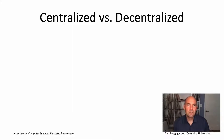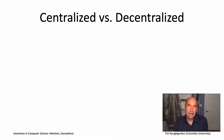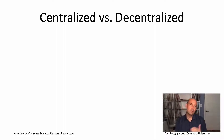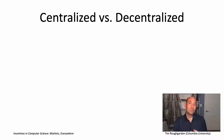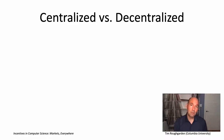Now that we have a bunch of examples of markets enabled by technology in our mind, let's spend a little time comparing and contrasting them. There are a number of different dimensions along which we could do this. In the interest of brevity, I'm just going to pick one, which is to look at which markets are more decentralized and which ones are more centralized.